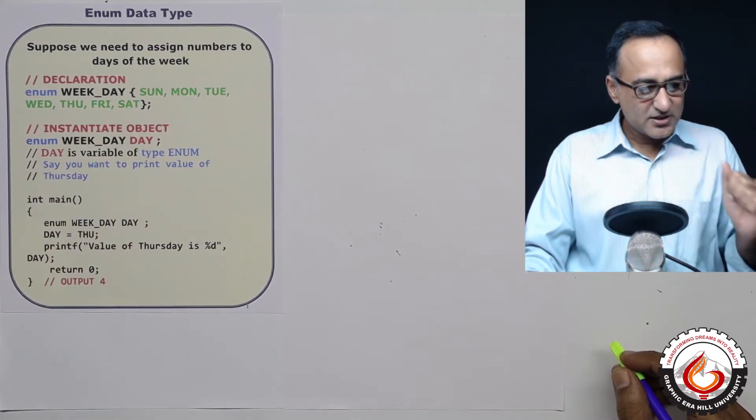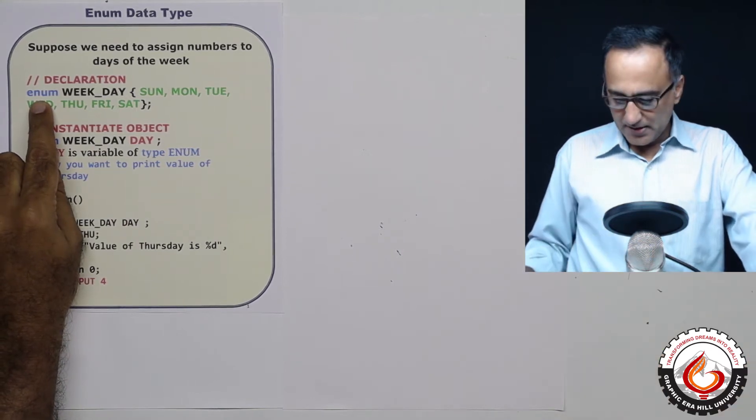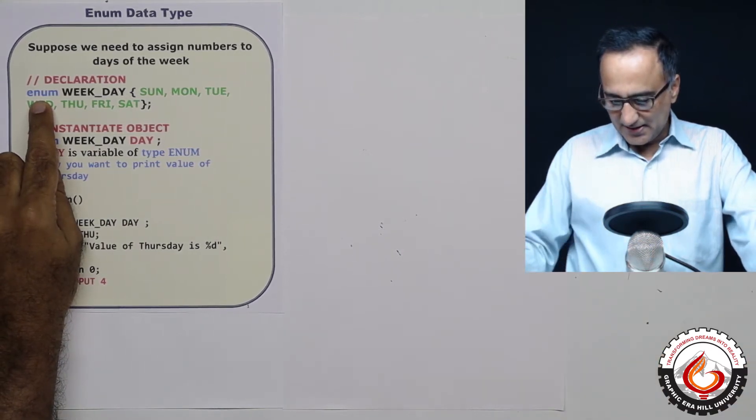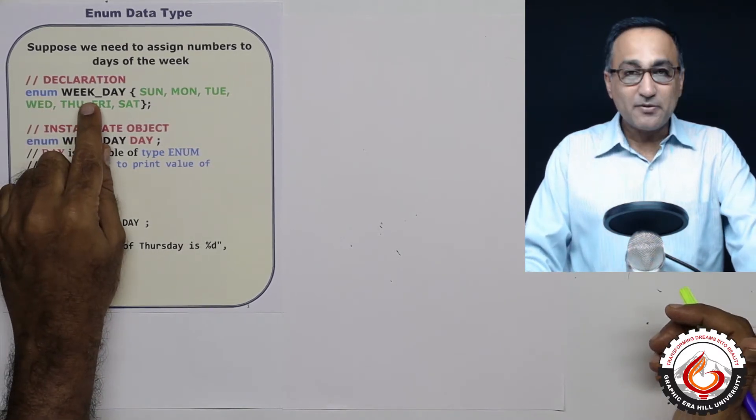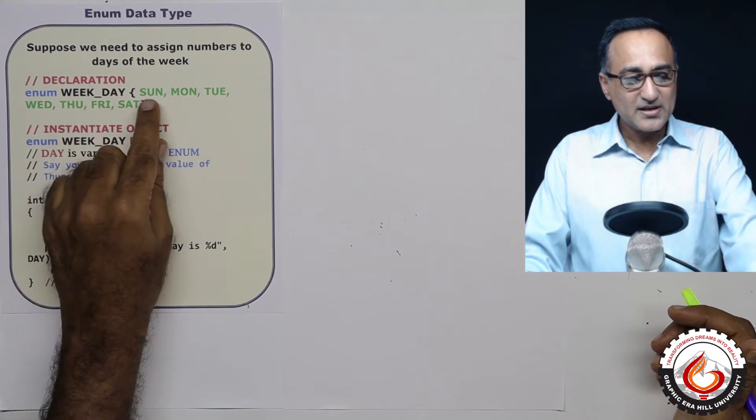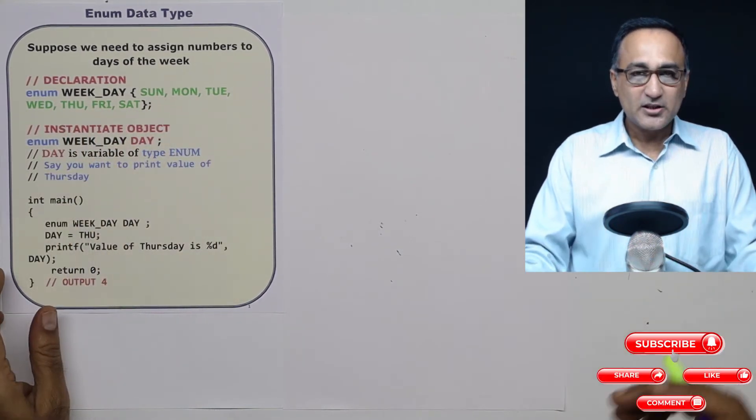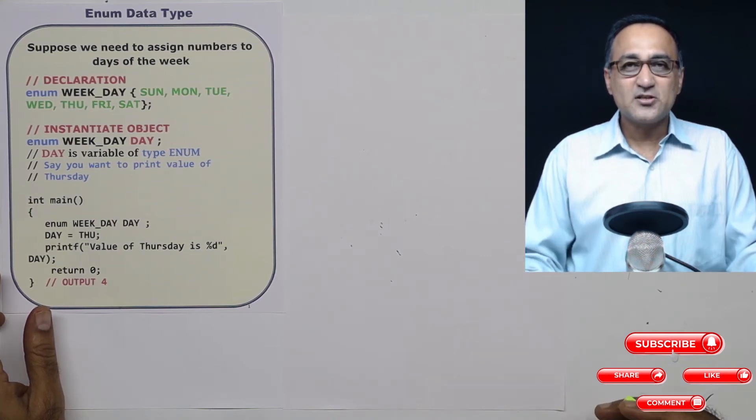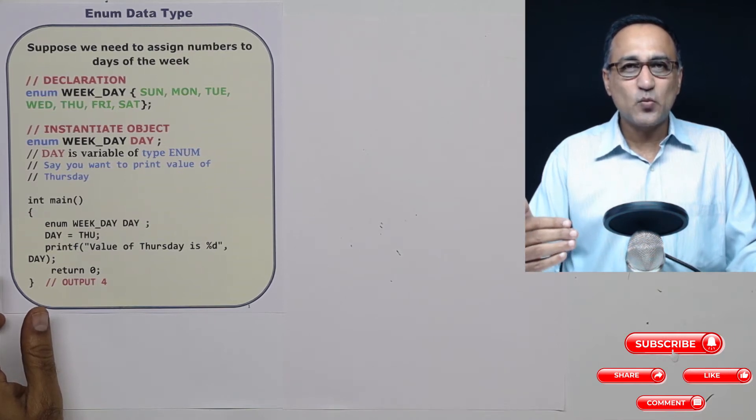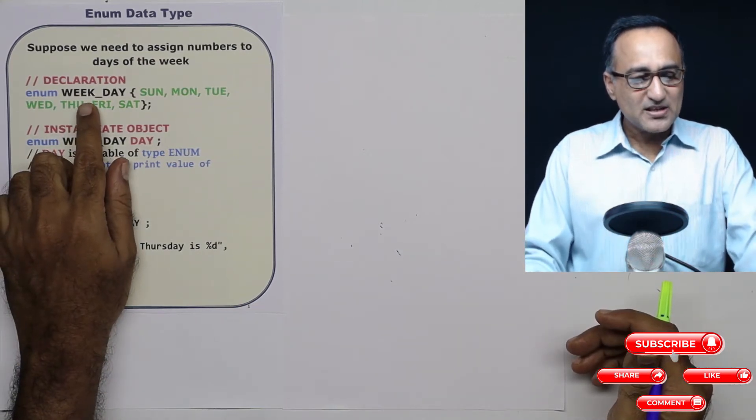So here you need to understand a few things. This is the enum keyword. And this declares an enum type of a variable, which has these following states or enumerators. The word enum stands simply for enumeration or a listing. Suppose I tell you enumerate all the numbers from one to 10. So you will start listing 1, 2, 3, 4, 5, 6 like that.